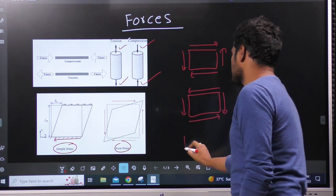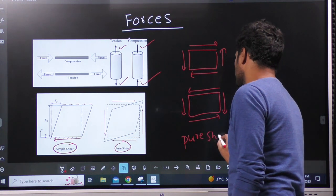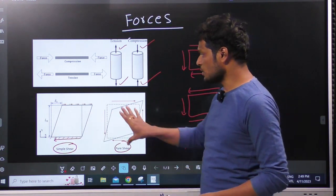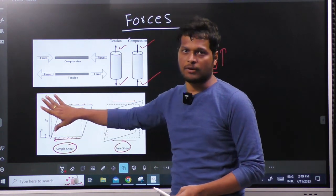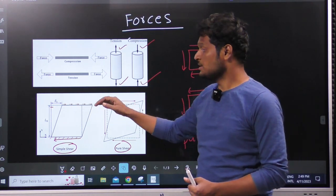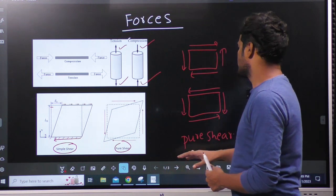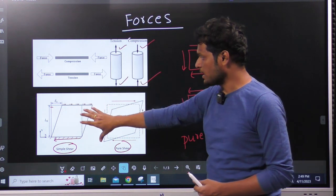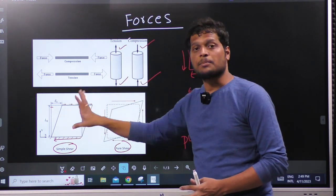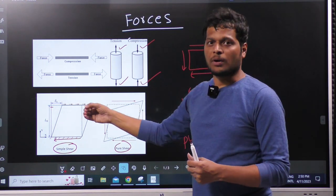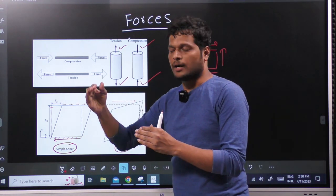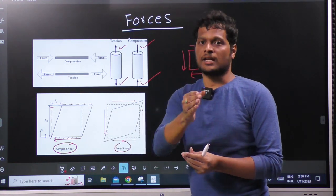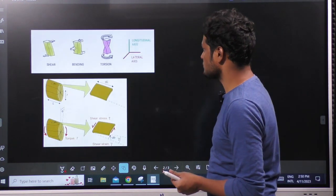Pure shear means the shear will act in a specific pattern — it can be clockwise or anticlockwise. These are examples of pure shear. Simple shear is different from pure shear, and the total deformation will be delta. So, we have tensile force, compression force, and in shear, two types: pure shear and simple shear. We really do not apply shear directly — we get it in the form of bending and torsion. Directly applying shear is a very rare case in strength of materials.